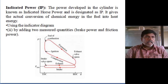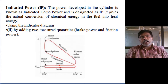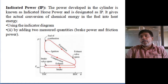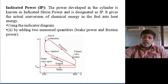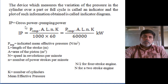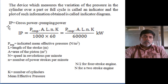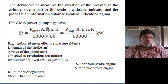Indicated diagram means generally in R&D labs only we are doing that calculation. This measurement of brake power and friction power we can calculate in normal conditions. If you use an indicator diagram-based calculation of indicated power, the formula is called PLAN: indicated mean effective pressure multiplied by the length of the stroke and area of the cylinder and number of power strokes.